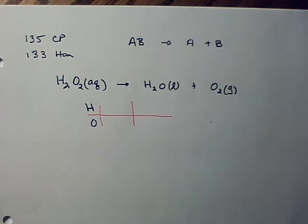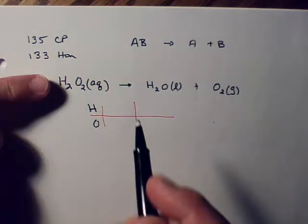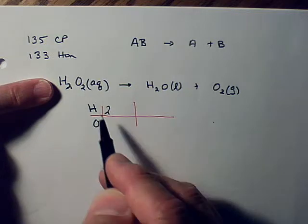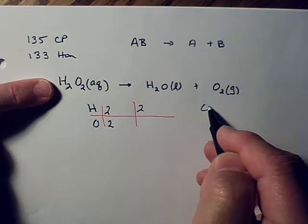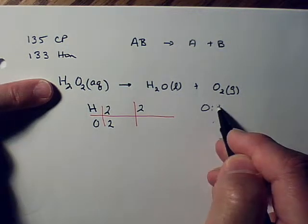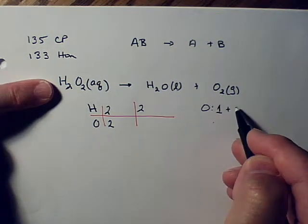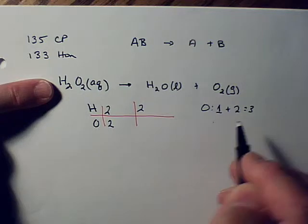We're going to make our grid for doing an atom inventory. And we're going to start by counting the elements we have. We have two hydrogens and two oxygens on the left. On the right, we have two hydrogens, but we have one oxygen here plus the two oxygens here. So currently we have three oxygens.